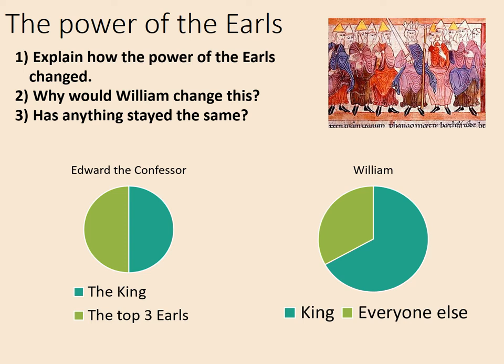The power of the earls was quite substantially reduced. The top three earls in Edward the Confessor's England had roughly the same combined power as the king — but all the earls in William's England combined did not have anything like the power of the king. Why would he change this? William was a control freak who wanted to ensure the earls didn't step out of line. He didn't want anybody competing with him for the throne, which had been a common phenomenon in Saxon England where powerful earls could challenge and influence the king.